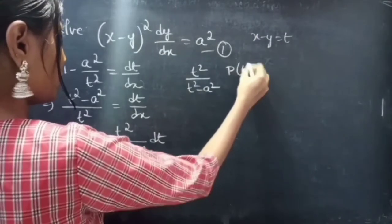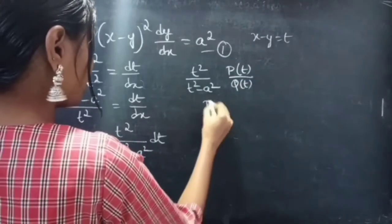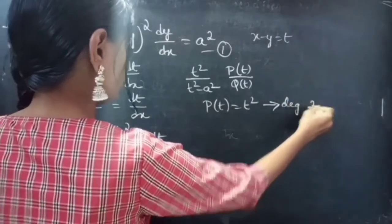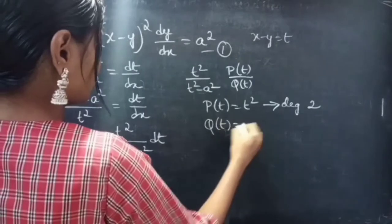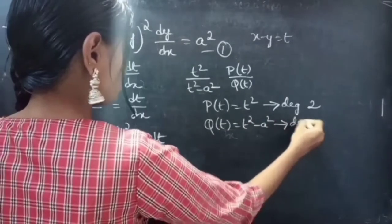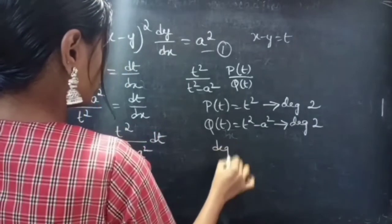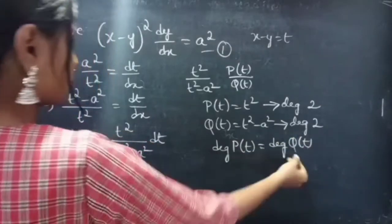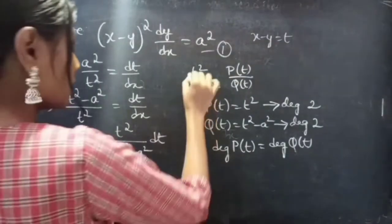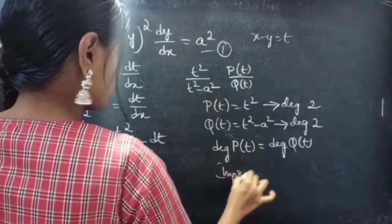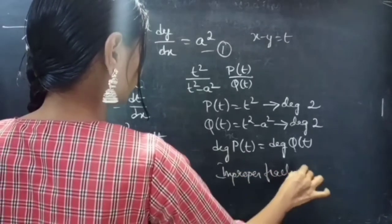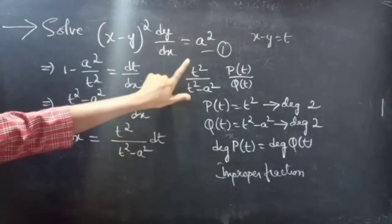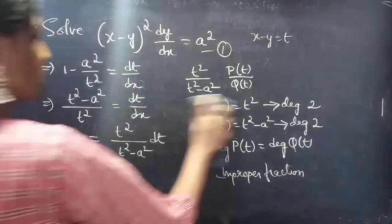Here we have t squared by (t squared minus a squared), represented as p(t) by q(t), where p(t) equals t squared with degree 2, and q(t) equals t squared minus a squared also with degree 2. Since degree of p(t) equals degree of q(t), this fraction is an improper fraction. So we will reduce it to a proper fraction using division.